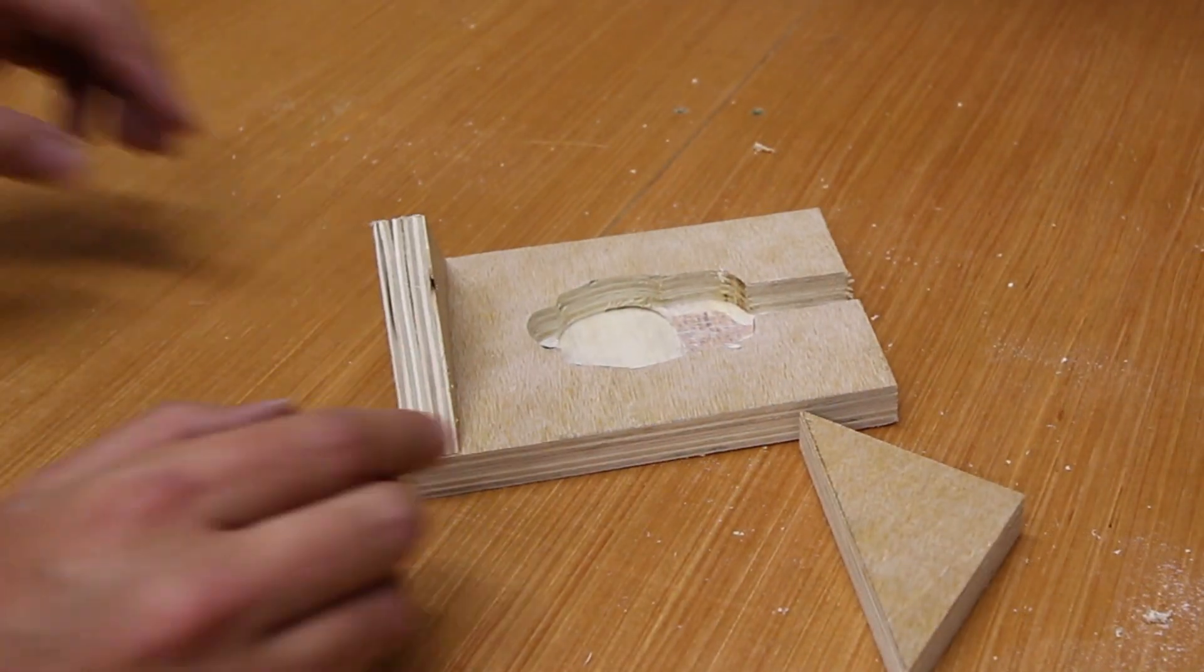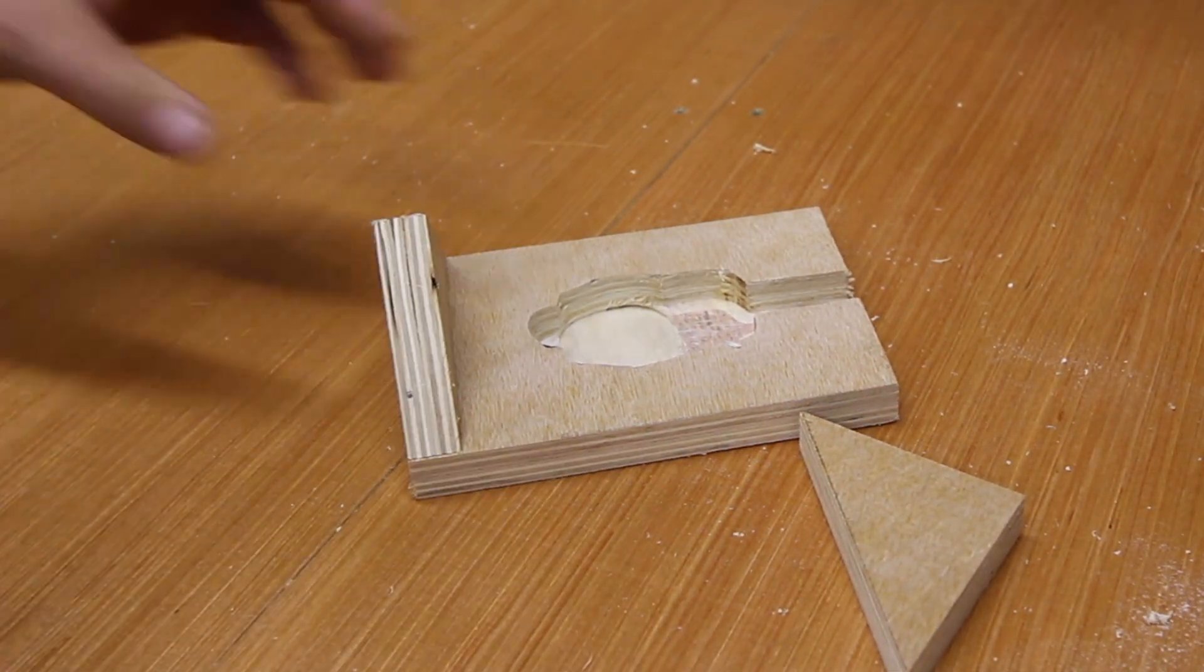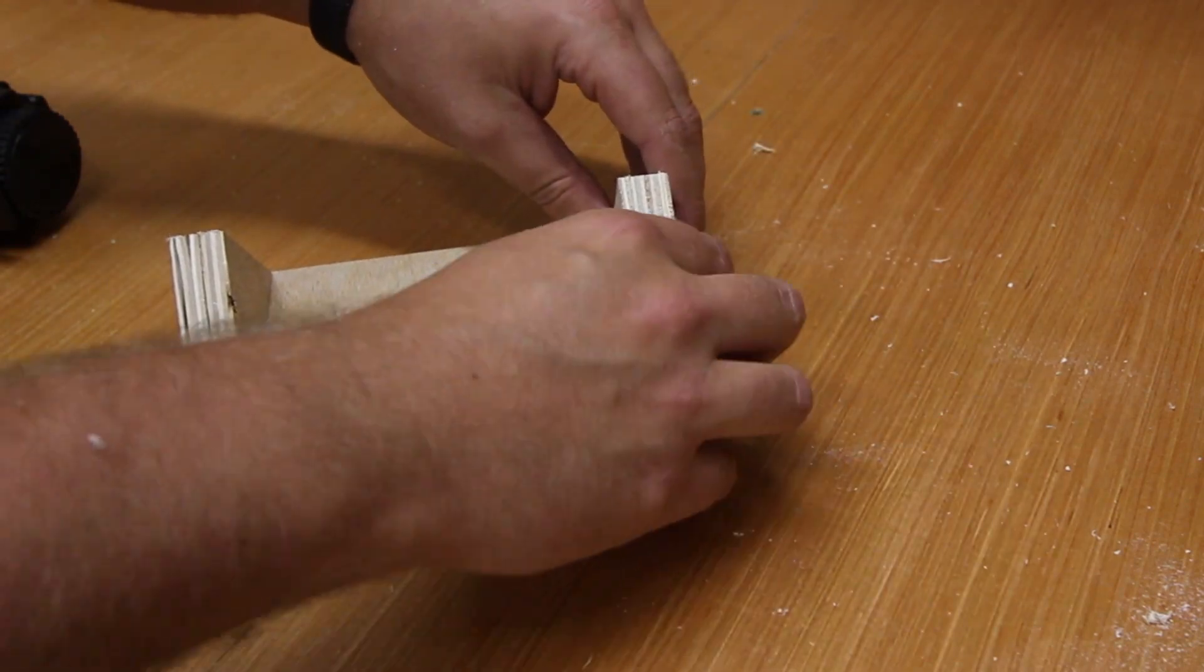As this does not take much weight, I'm just using a brad nailer to fit the parts together and then adding a French cleat on the back.